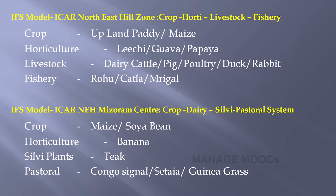The second model recommended by ICAR's north east hill region center combines crop, horticulture, silvi plants, and pastoral. In crop, maize and soybean are recommended along with banana as a horticulture crop, teak as a silvi plant, and finally Congo signal or guinea grass as pastoral.